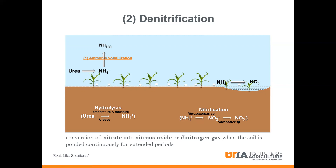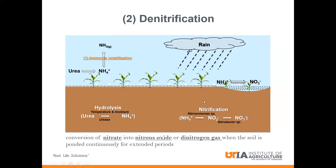What happens if you have nitrate and there's heavy rainfall, especially in a very clay or fine-textured soil? If you have ponding continuously for extended periods — at least two or more days — that nitrate is converted to nitrous oxide or nitrogen gas. Again, this escapes to the atmosphere, and a grower can lose nitrogen via this pathway.